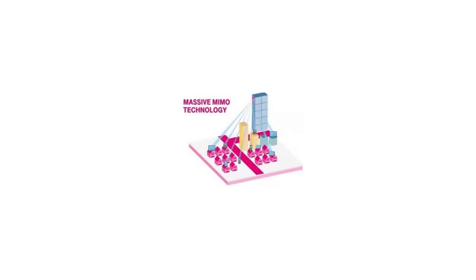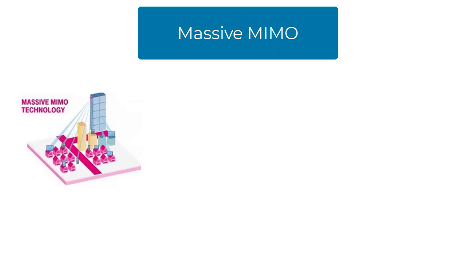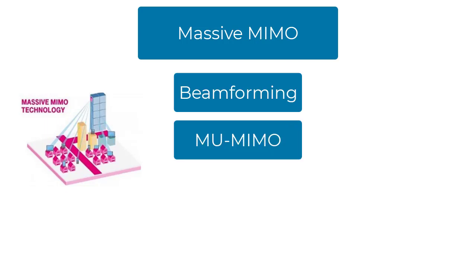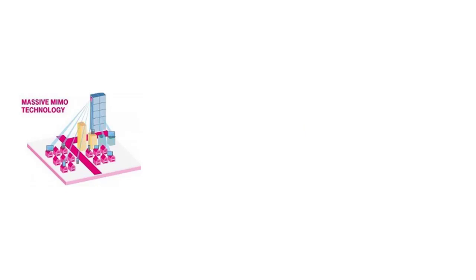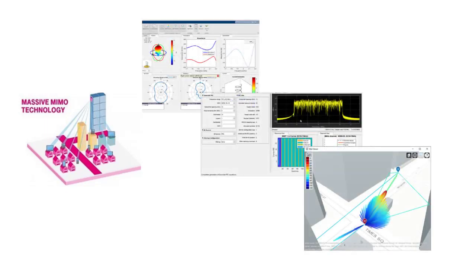Massive MIMO is a multi-antenna wireless communication technology that employs a very large number of antenna elements to improve performance. In this video, we will explore the fundamental components of Massive MIMO alongside related technologies such as beamforming, multi-user MIMO, millimeter wave, and ray tracing. We will also show how MATLAB and its wireless communications products can be used to build, test, and analyze Massive MIMO systems as part of your wireless communications system design.